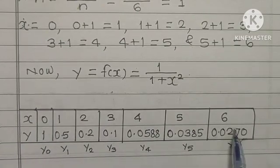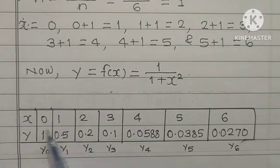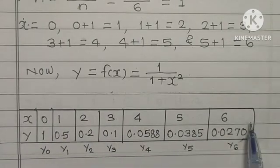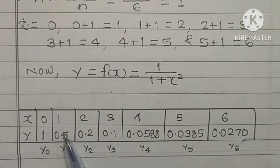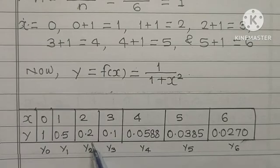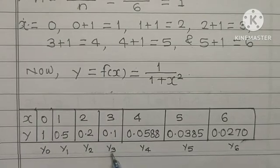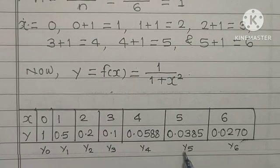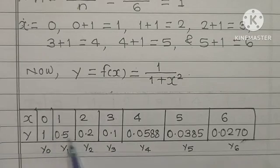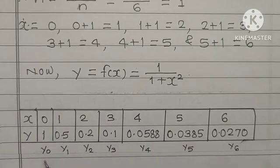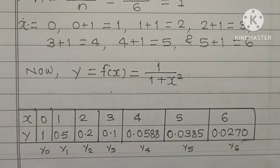Now these are the values of Y. So these values are named as Y0, Y1, Y2, Y3, Y4, Y5 and Y6. These are the values of Y starting from Y0 to Y6.